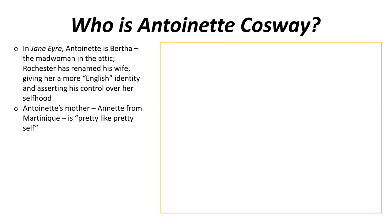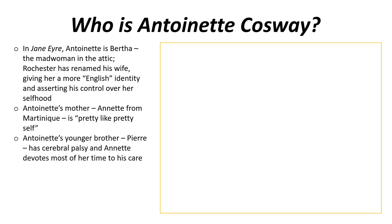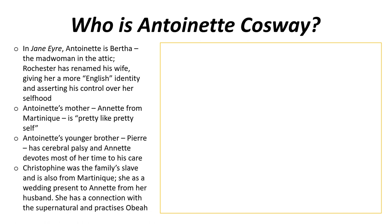Antoinette's mother is called Annette. She's from Martinique, and in the first couple of lines of Wide Sargasso Sea she's described as being pretty. She's extremely beautiful and very much aware that her beauty is the key to the survival of her family. When the novel begins, her first husband has died and she needs to marry again to get financial stability. Antoinette's younger brother is called Pierre and he has cerebral palsy, and Annette devotes most of her time to his care. Christophine is also one of the key characters — she was the family slave before the Emancipation Act, also from Martinique, and was a wedding present to Annette. Christophine has connections with the supernatural and practises obeah.